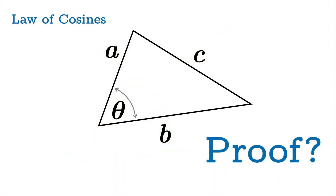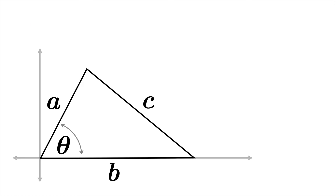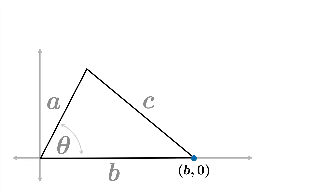So how are we going to prove this? What we're going to do is take our triangle, wherever it lies in the plane, use a rigid motion and put it onto the axis so that the vertex with the angle theta is at the origin, and the side labeled b runs along the positive x-axis. When you do that, this vertex has coordinates (0, 0).